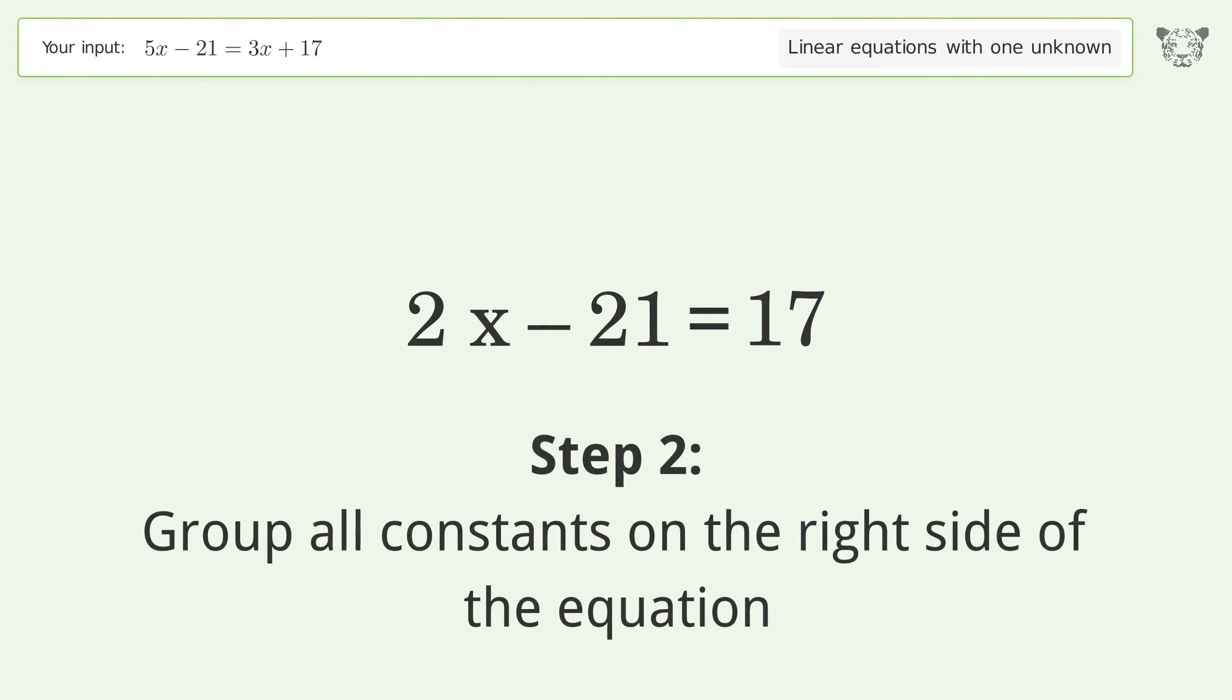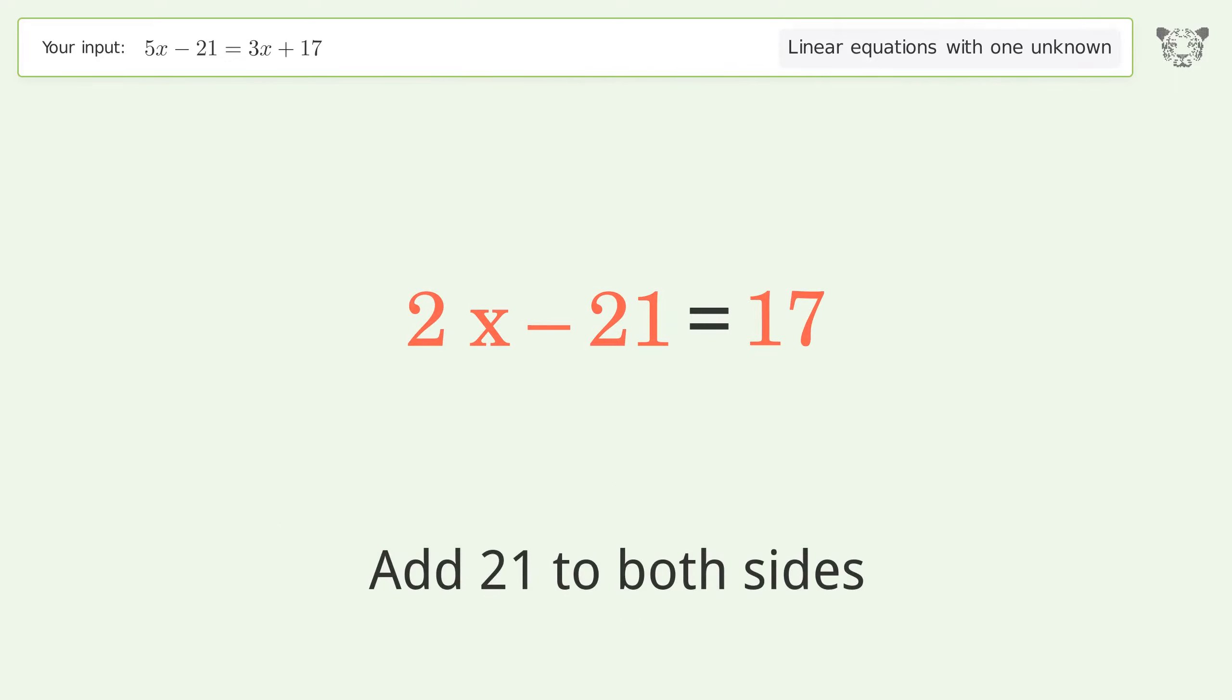Group all constants on the right side of the equation. Add 21 to both sides.